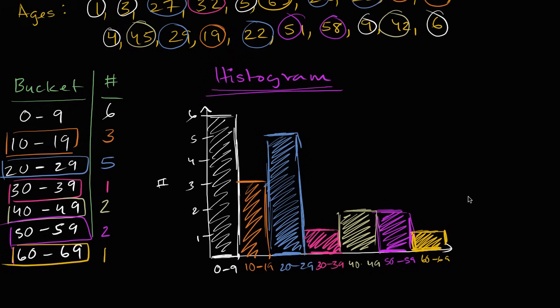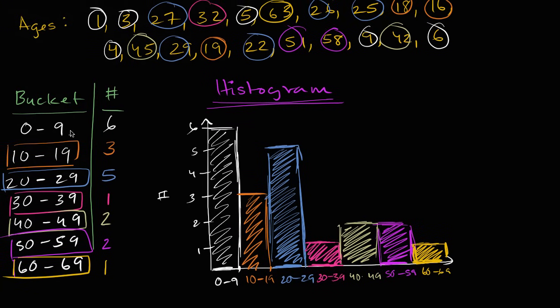I took our data, I put it into buckets that are kind of representative of the categories I care about. Zero to nine is kind of young kids, 10 to 19, I guess you could call them adolescents or roughly teenagers. Although obviously if you're 10, you're not quite a teenager yet. And then all the different age groups. And then when I counted the number in each bucket and I plotted it, now I can visually get a sense of how are the ages distributed in this restaurant.